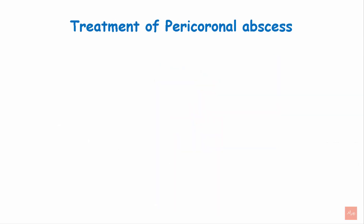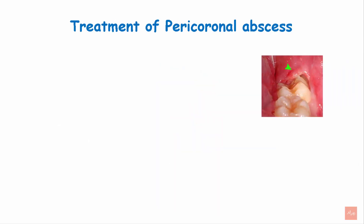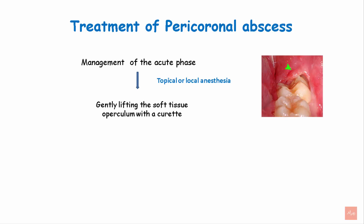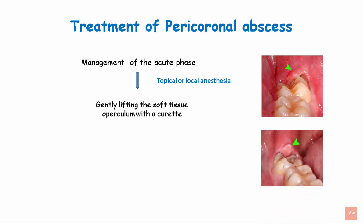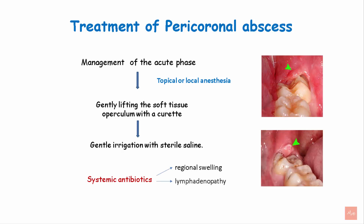For the treatment of pericoronal abscess, management of the acute phase is important. It is performed by giving local or topical anesthesia. Gently lifting the soft tissue operculum with a curette releases the pressure, and gentle irrigation with sterile saline is performed. Systemic antibiotics are indicated if there is regional swelling, lymphadenopathy, or systemic signs like fever and malaise.